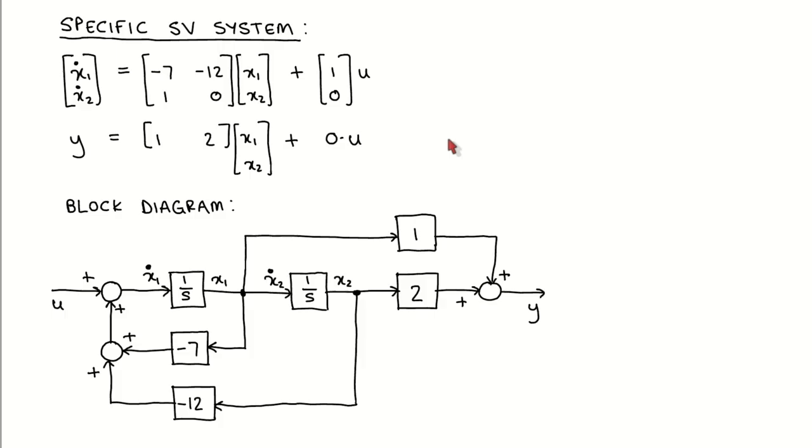We can represent a specific state variable system with a block diagram that only has scalar signal lines. To illustrate this, let's work through an example. Suppose a specific second order state variable system is described by this state equation and this output equation. The corresponding block diagram is shown here.